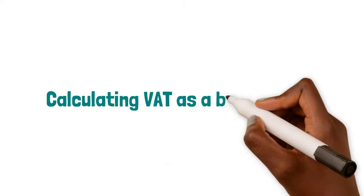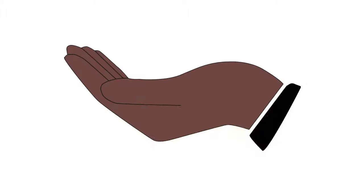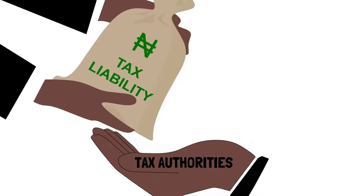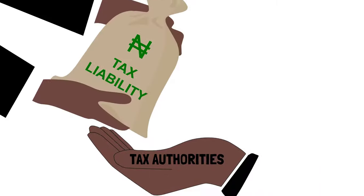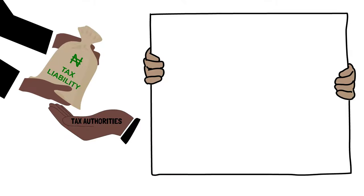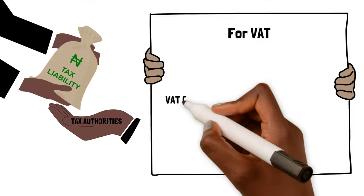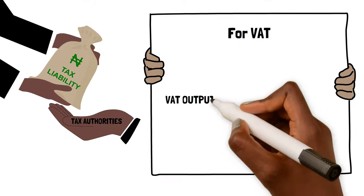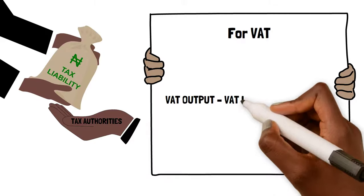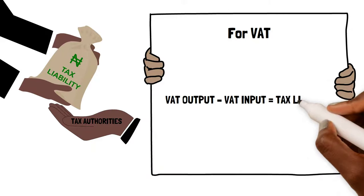Calculating VAT as a Business Owner. The amount remitted to the tax authorities as a business owner is tax liability. To calculate this in the case of VAT, we use the formula: VAT output minus VAT input equals tax liability.